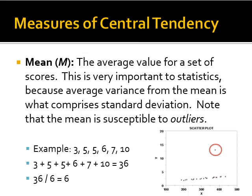The mean, abbreviated capital M italicized, is the average value for a set of scores. This is very important to statistics because average variance from the mean is what comprises standard deviation, and standard deviation is used to compare a person's score with the overall distribution of a sample score. This helps us understand the meaning of a person's score in the context of the sample. Note that the mean is susceptible to outliers, particularly with small samples.